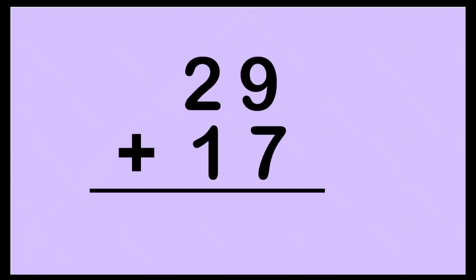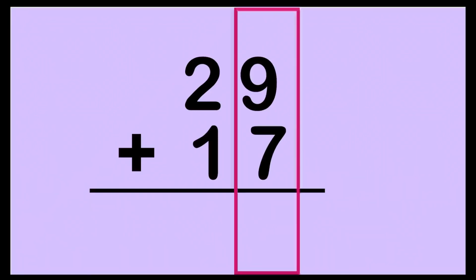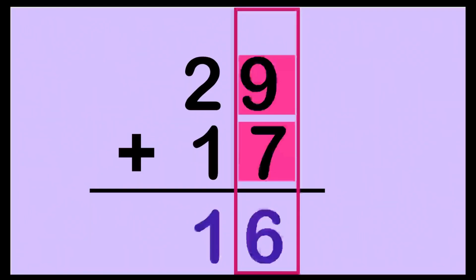Let's have now our first example in addition with regrouping. Again, in adding numbers, you're going to start at the one's place. We have 29 plus 17. So 9 plus 7 — put 9 on your mind, big number first, count on: 9, 10, 11, 12, 13, 14, 15, 16. We have 16 here. However, we cannot put two digits in the one's place. That's why we are going to regroup one to the next place value, to the ten's place.